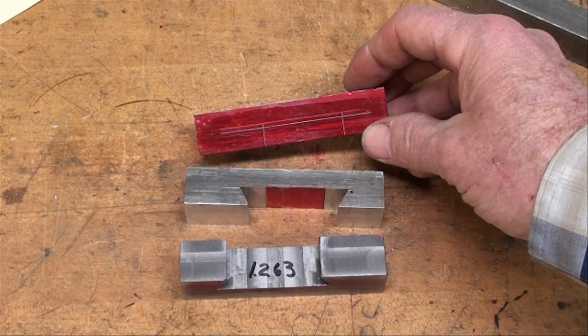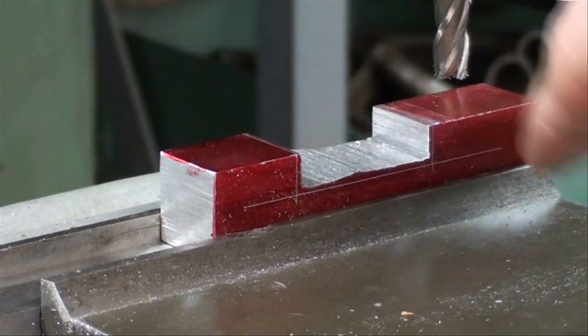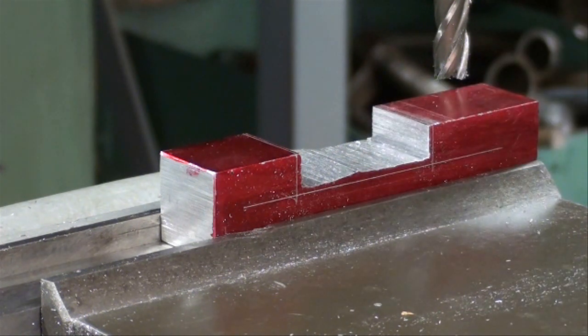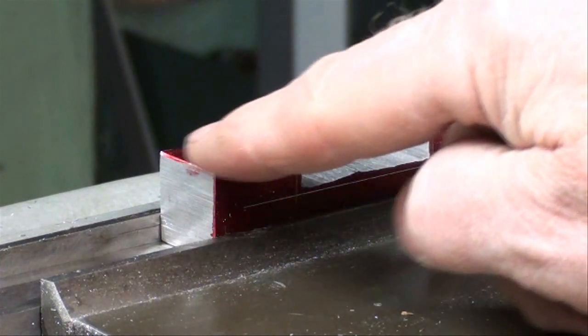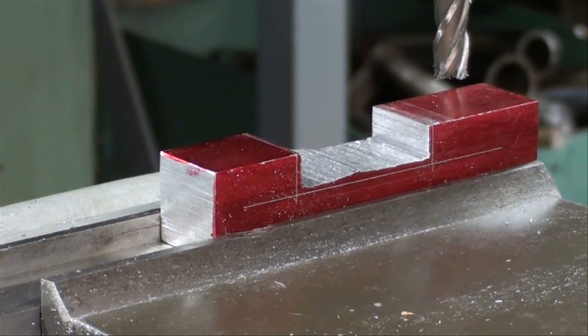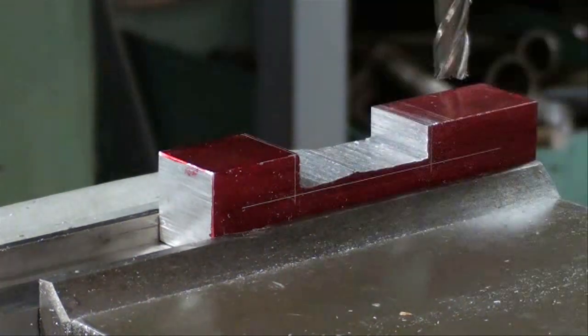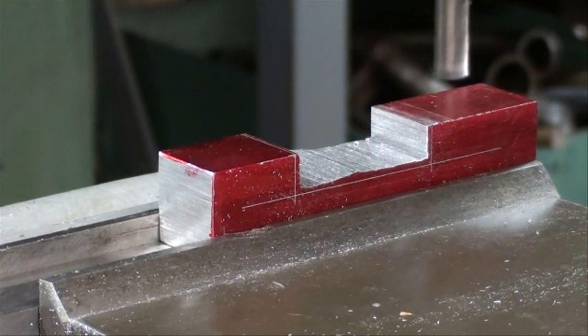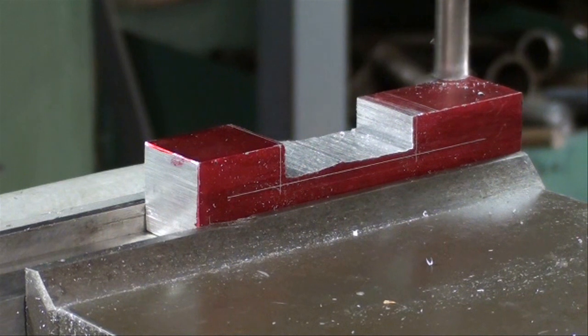The work is now mounted in the Bridgeport vise. I have rough sawed that out—took less than three minutes. I stayed away from the lines. The next thing I'm going to do is—remember that our height is 0.355—take a light finishing cut across here, then zero out my collar on the knee adjustment. I'm going to bring her up to 300 thousandths to rough it out.